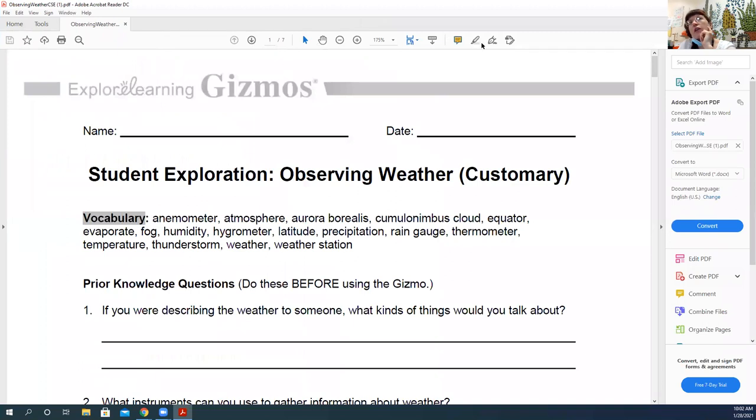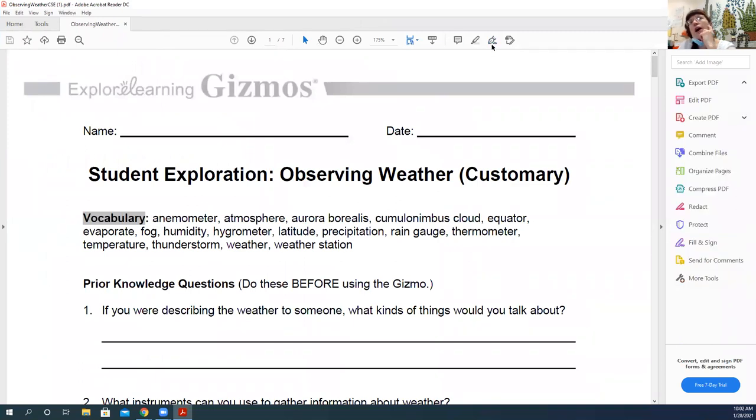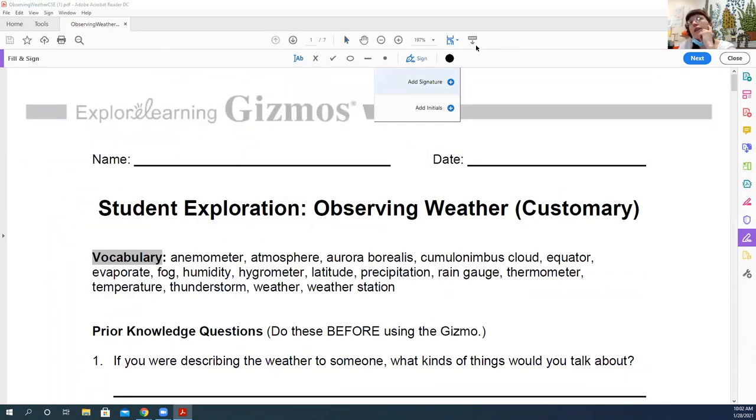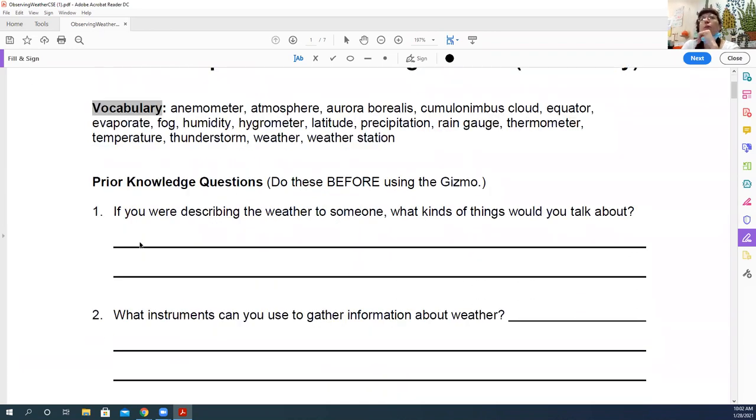So if I click the icon that looks like a pen, and then click the letters, it will let me type on it. So the gizmo that we're doing is the student exploration, observing weather, and our prior knowledge questions were due now. So what do you guys think? If you were describing the weather to someone, what kinds of things would you talk about?